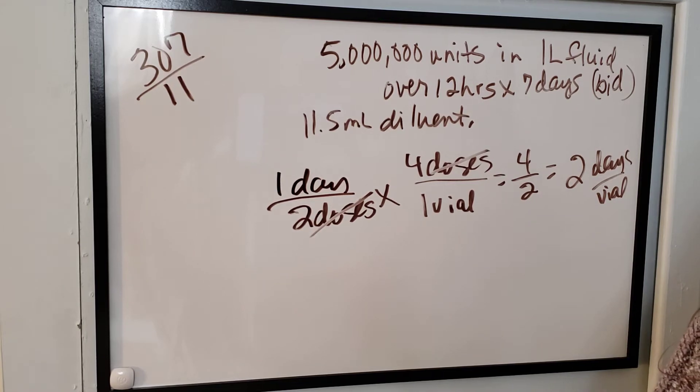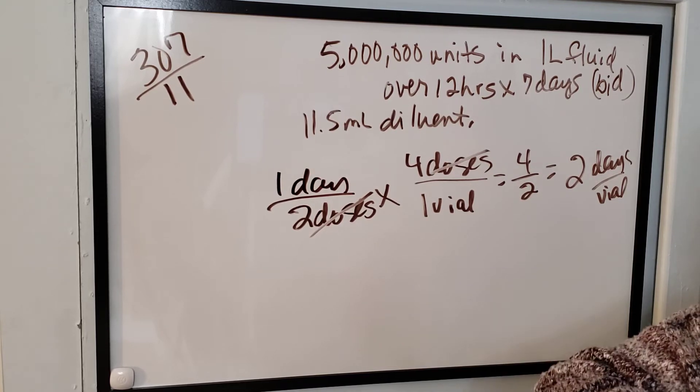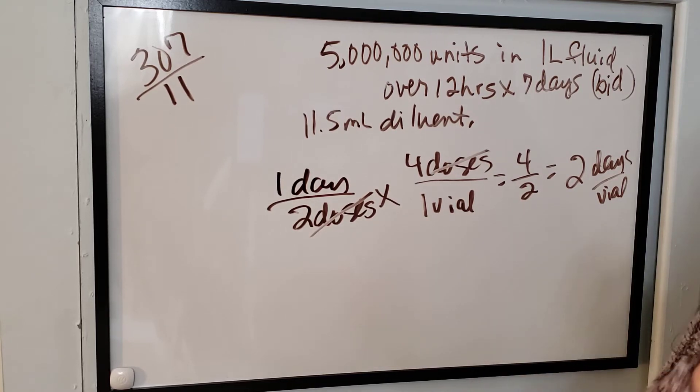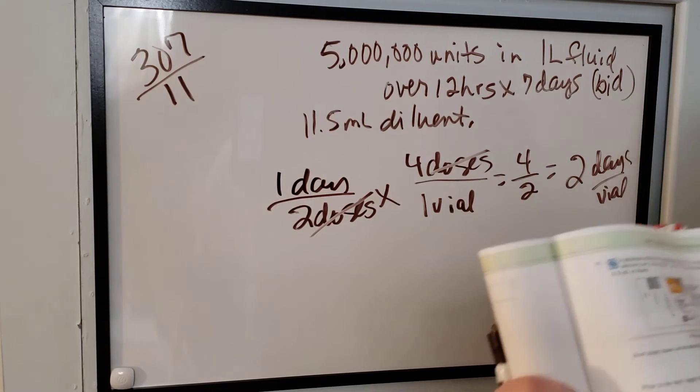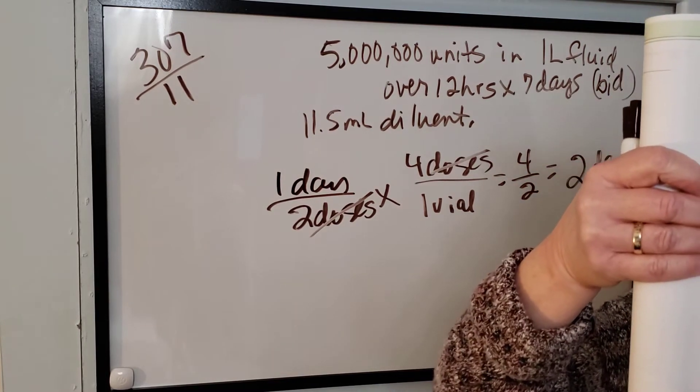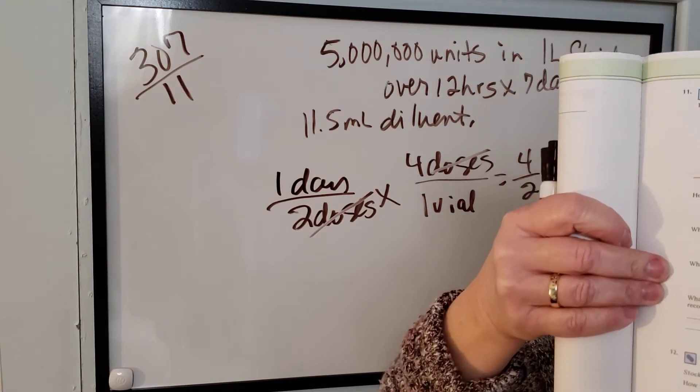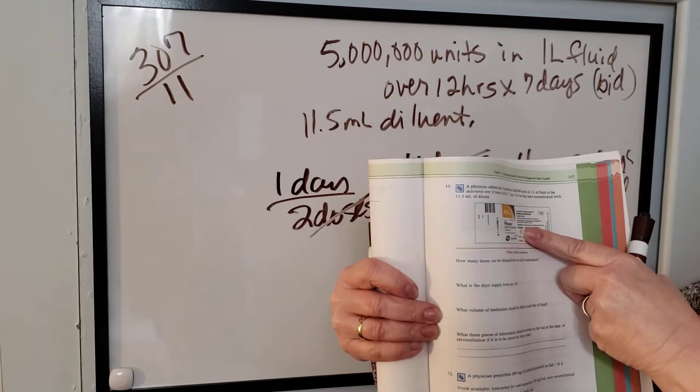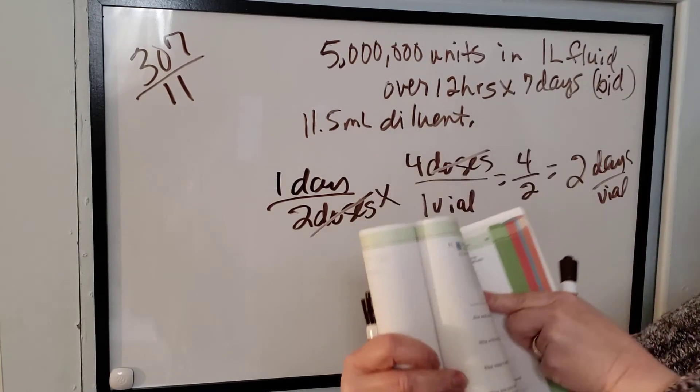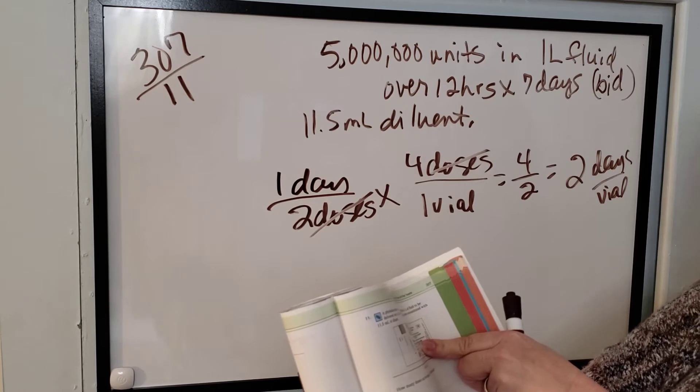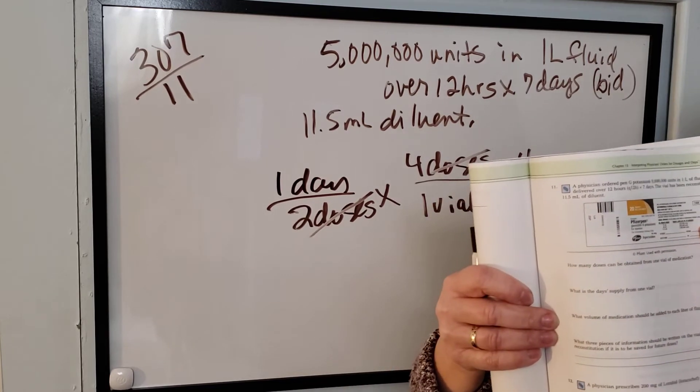What volume of medication should be added to each liter of fluid? That's kind of tricky. You added 11.5 milliliters of diluent and then way down here in the corner of your label in real small print, it tells you milliliters of diluent added approximate units per milliliter of solution.